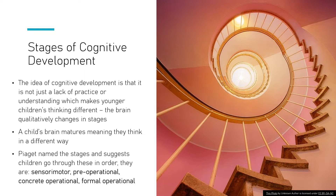Piaget gave a name to four different parts of these stages, and he said you have to go through one stage before you can go through the next. He also gave rough age estimates as to when these will happen, and they are sequential. The stages are the sensorimotor stage, pre-operational stage, the concrete operational stage, and the formal operational stage. We'll go through each of those and look at the strengths and weaknesses of the theory as a whole.